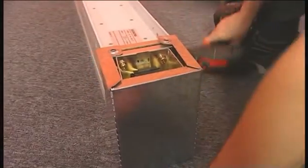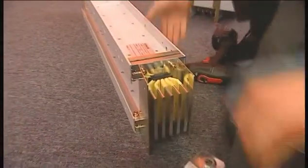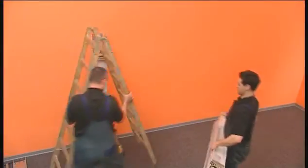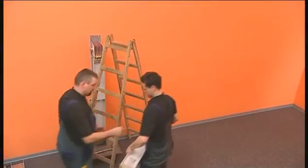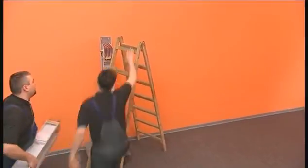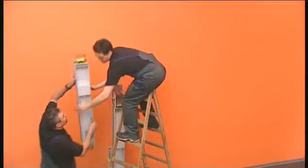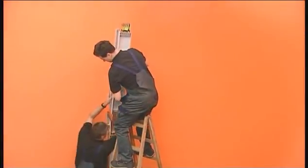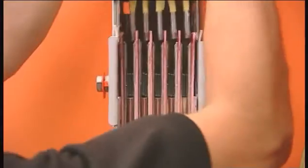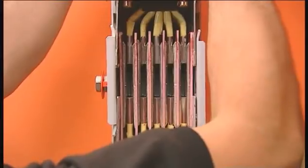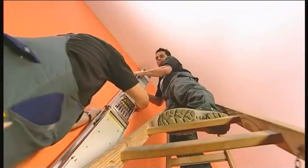To mount the next trunking unit, remove the transport protection. The trunking unit can now be mounted on the wall by simply inserting the clamping block. The trunking unit is secured with the screws of the flange cover.